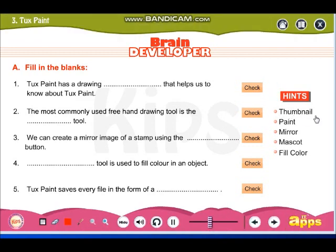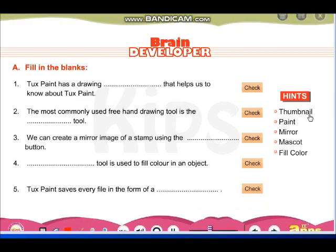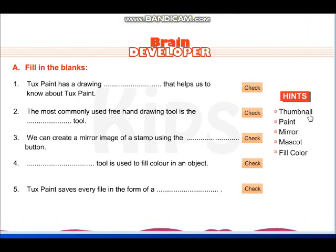The first word is 'thumbnail' — T-H-U-M-B. Thumbnail means a very small image, similar to the size of a thumbnail nail. So when you go to see an image in Tux Paint, the size of the image shown is just like a thumbnail — that is known as your thumbnail.